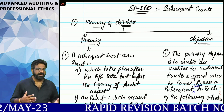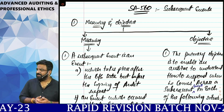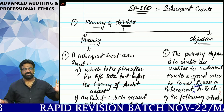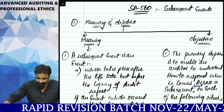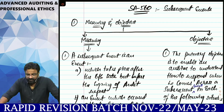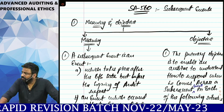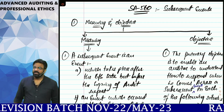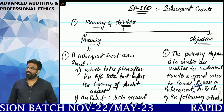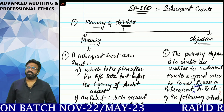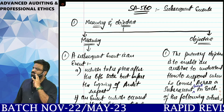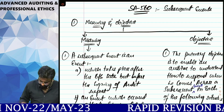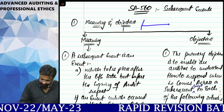When we come across any kind of subsequent event, we need to know what techniques and procedures the auditor has to follow and from which sources. Whenever we talk about subsequent events, there are three things that should come to your mind — three types of events.